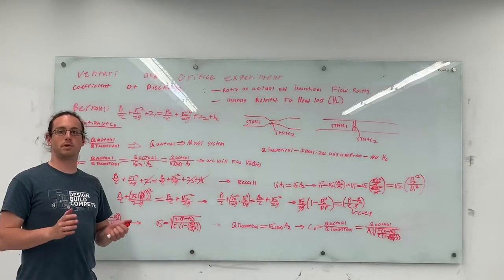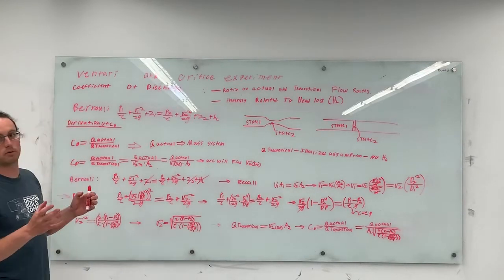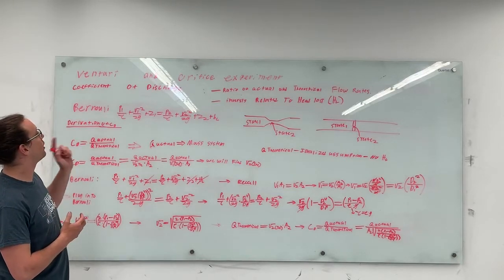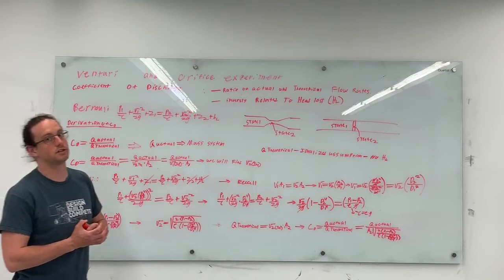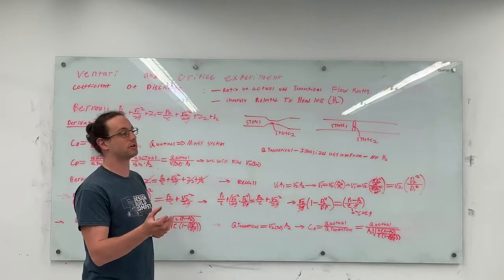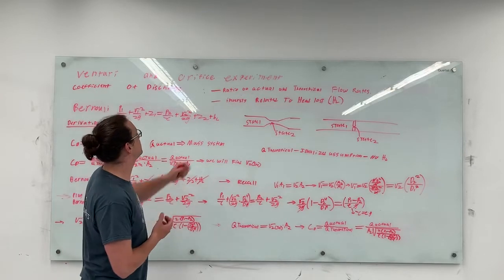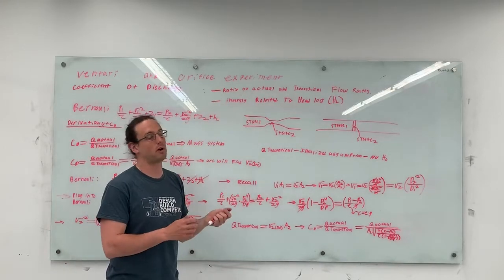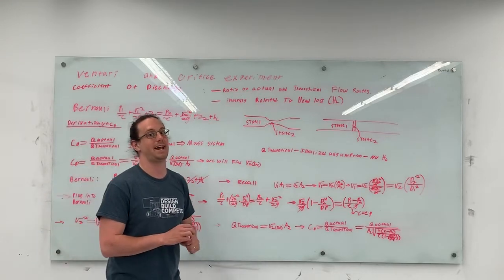Now I will explain the real meat of the lab: the coefficient of discharge. You're going to be finding the coefficient of discharge for both the Venturi and the Orifice flow meters. The coefficient of discharge is a ratio of actual and theoretical flow rates, and it is inversely related to head loss.